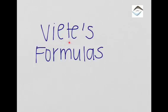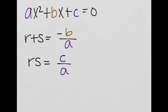Hi, today we're going to be talking about Vieta's formulas. Vieta's formula basically states: for a quadratic, when you have ax squared plus bx plus c is equal to zero, and we call the roots r and s, then r plus s is equal to negative b over a, and r times s is equal to c over a.